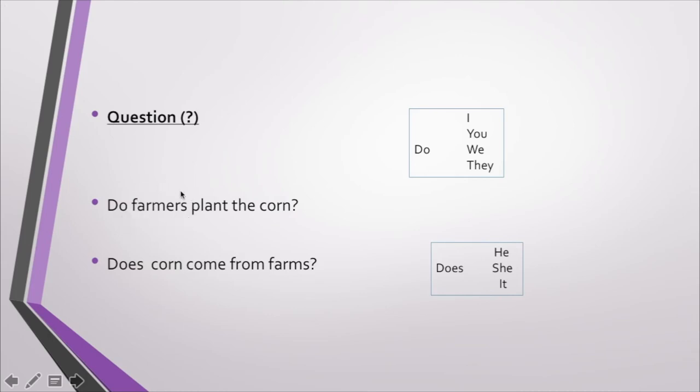Por eso aquí farmers, recuerden que farmers lo podemos reemplazar por un they, ellos. Por eso do al comienzo: do farmers plant the corn? Y tenemos la pregunta armada. Los granjeros plantan el maíz. Y acá does porque estamos hablando de it. Does corn come from farms? Maíz viene de las granjas. Se fijan, no lo traducimos pero tiene que estar presente para indicarnos que es pregunta.